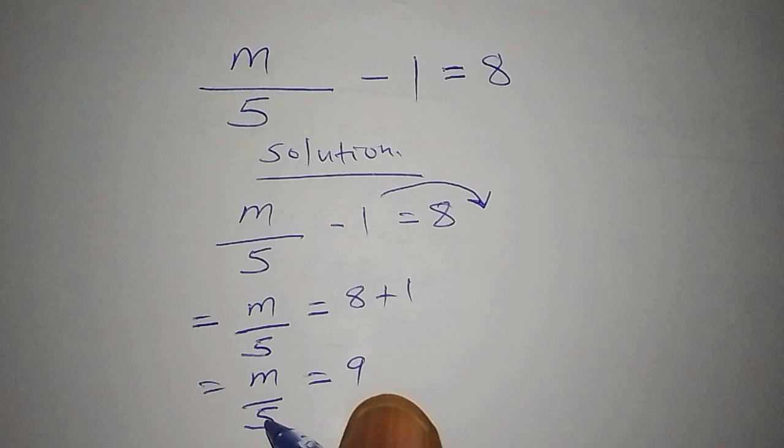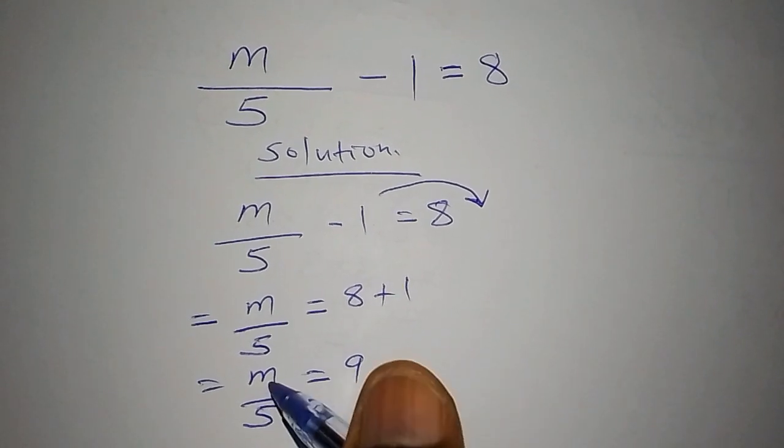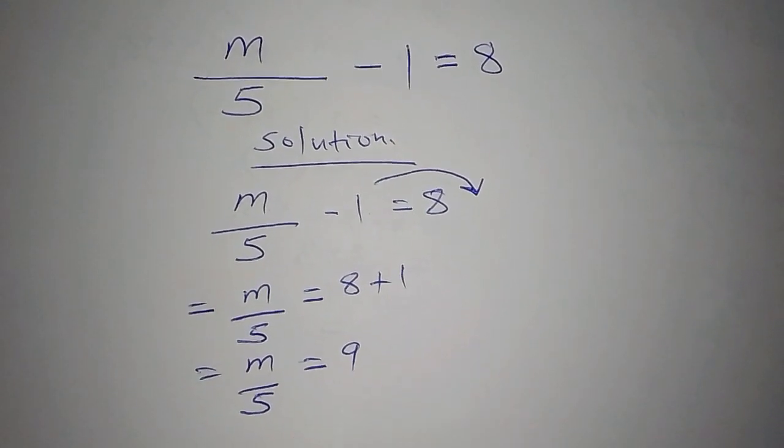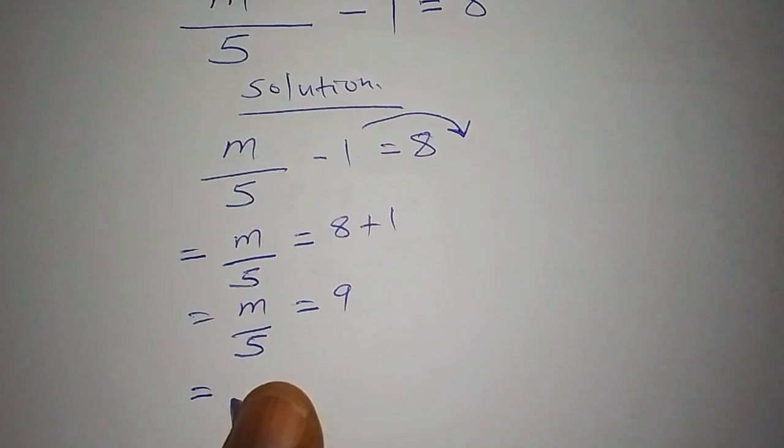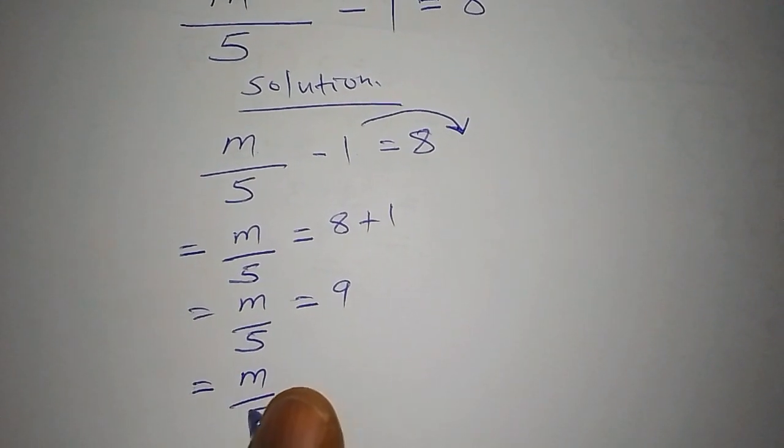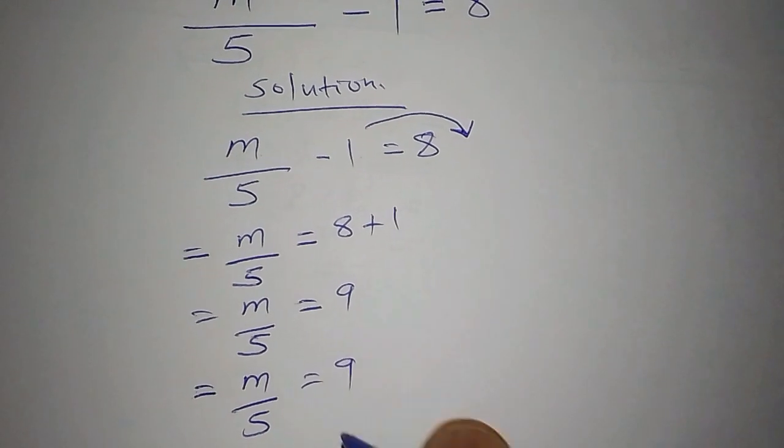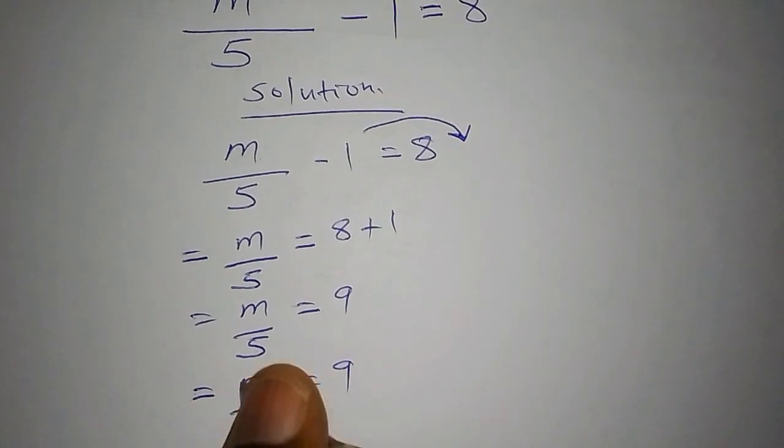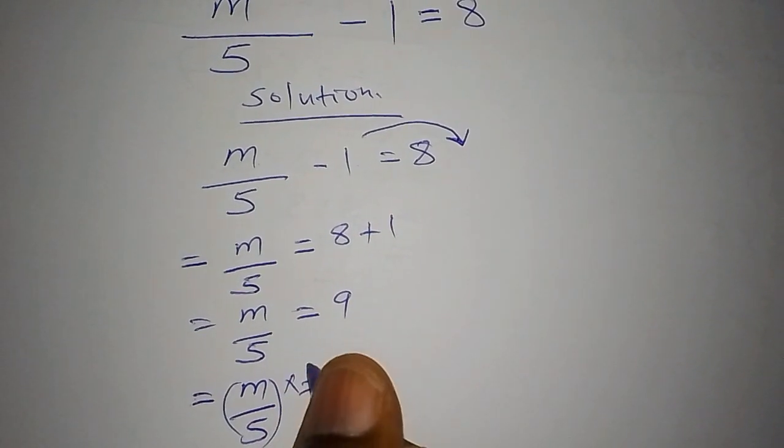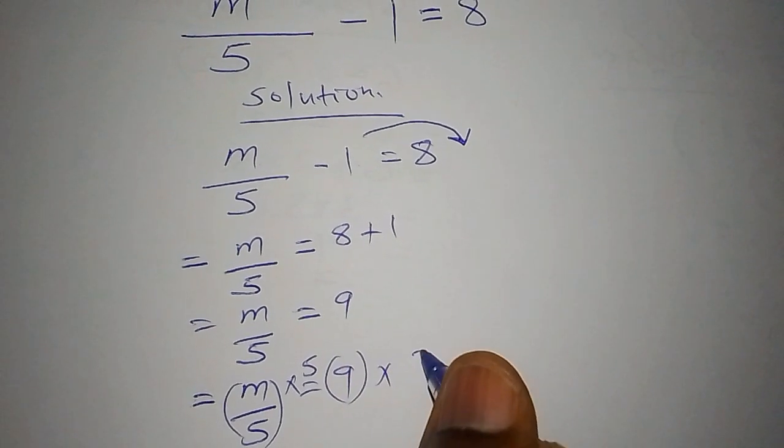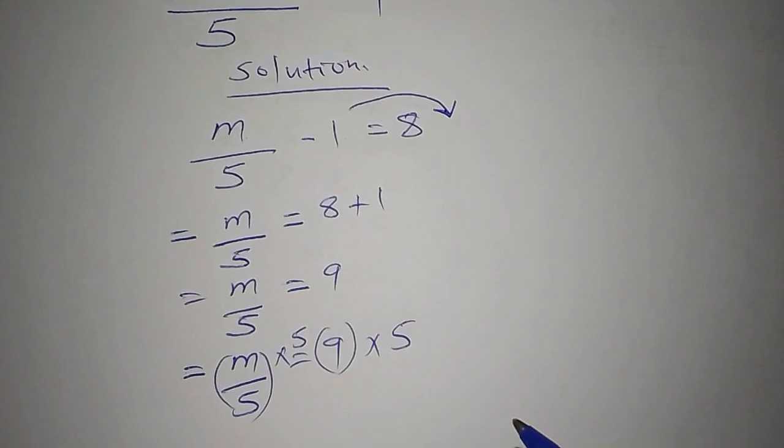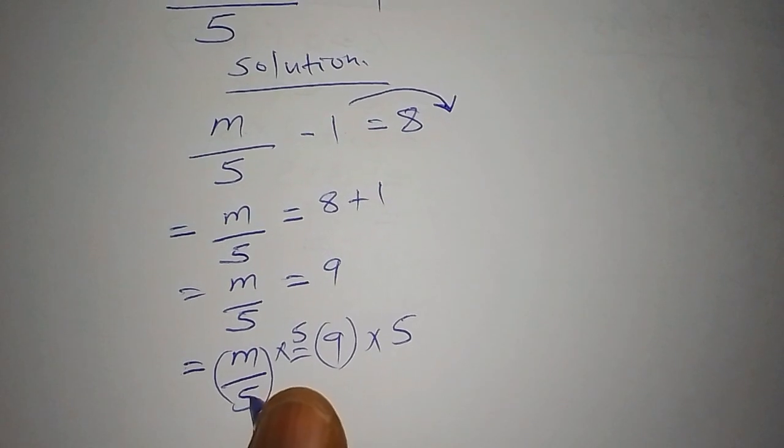We shall say that this one equals to m all over 5 equals 9. We multiply this side by 5, then we multiply this side also by 5.